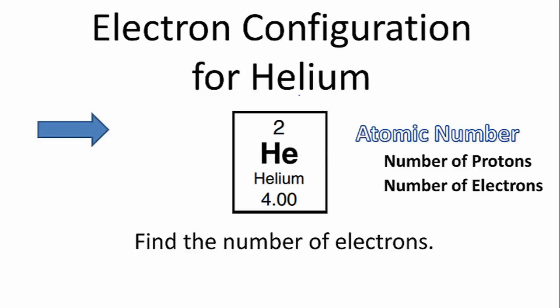To find the electron configuration for helium, we need first to look at the periodic table to figure out the atomic number. That's the number above the element symbol. That'll tell us the number of protons, but it also tells us the number of electrons.